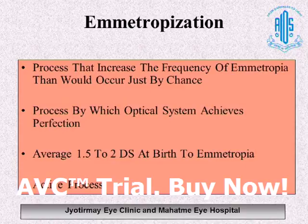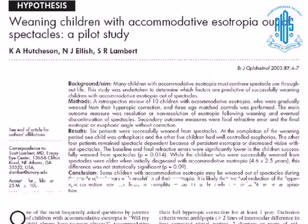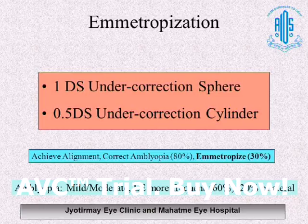Giving spectacles, achieving equal vision, and obtaining normal binocular vision are the initial management steps. The next goal is to achieve emmetropization — an active process. I strongly recommend following Hutchison's protocol or Janet Atkinson's protocol: once all three goals are achieved, start undercorrecting by one diopter of sphere and half a diopter of cylinder every 6 months. With this approach, if previously 30% emmetropized spontaneously, around 80% of patients are off spectacles by approximately 14 years of age.